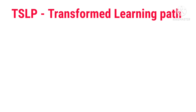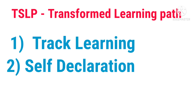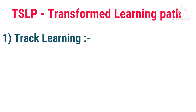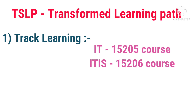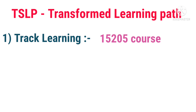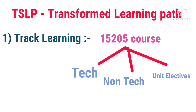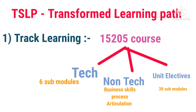Now, what is TSLP? TSLP means Transformed Learning Path. There are two ways to complete the prerequisite of the TSLP track: one is Track Learning and another is Self Declaration. For Track Learning, you go through the learning content in iOW World and complete the prerequisite. If you are in the IT stream, do the 15205 course. If you are in non-IT or ITIS stream, do the 15206 course. In 15205, there are sub-tracks: Tech courses, Non-tech courses, and Unit Electives. Tech courses have six sub-modules, and Non-tech courses contain Process, Business, and Articulation courses. Unit Electives has around 30 sub-modules.